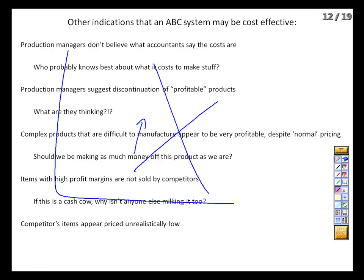Lastly, say we and our competitors are both producing the same product, and their prices seem unreasonably low — if we sold at that price, we'd be losing money. There are two things that could make this happen. First, maybe they've found a cheaper way to produce the product — they could have gone through the ABC process, identified non-value-added costs and eliminated them, and that means we need to do it too to compete. Second, maybe we're looking at our Product Y situation, where we miscalculated costs and activity-based costing would reveal the product costs much less than expected.